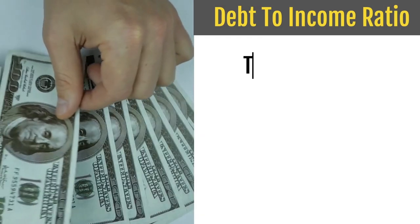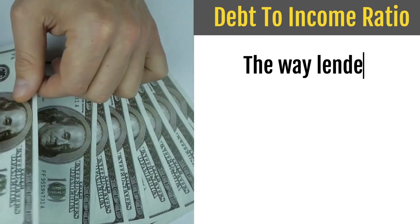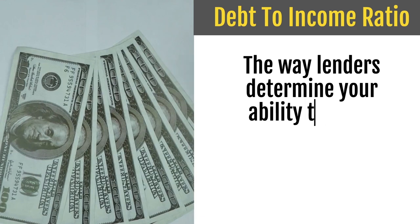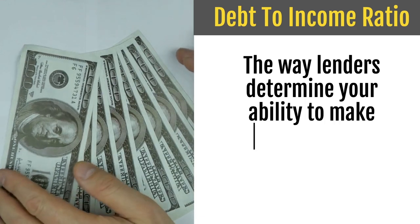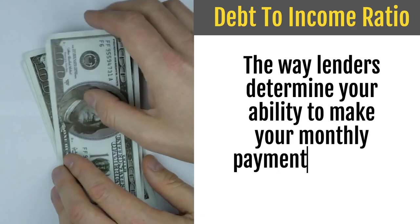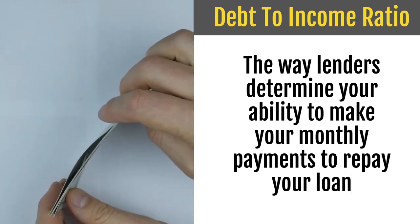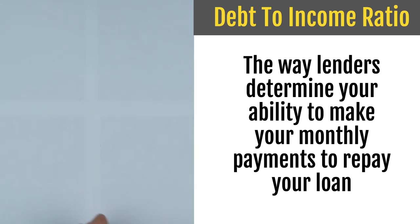First, what is debt-to-income ratio? It is the way lenders determine your ability to make your monthly payments to repay your loan. This is particularly true with mortgages — when they're deciding if you can repay your loan, they're going to look at your debt-to-income ratio.